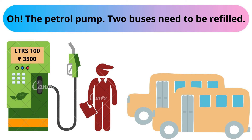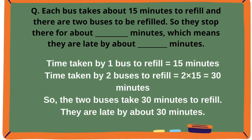The petrol pump! Two buses need to be refilled. Each bus takes 15 minutes to refill and there are two buses to be refilled. So, they stop there for about 30 minutes, which means they are late by about 30 minutes. Time taken by two buses to refill will be 2 multiplied by 15, which equals 30 minutes.